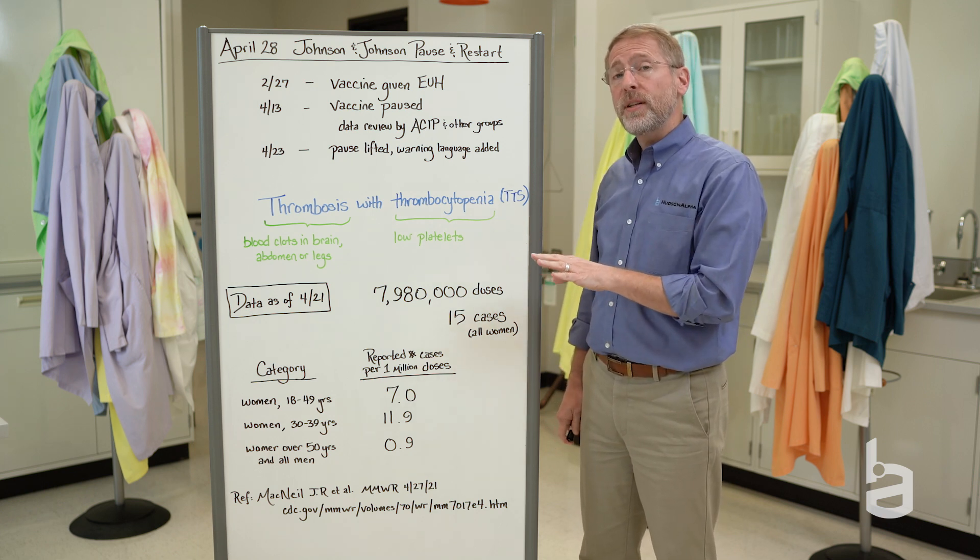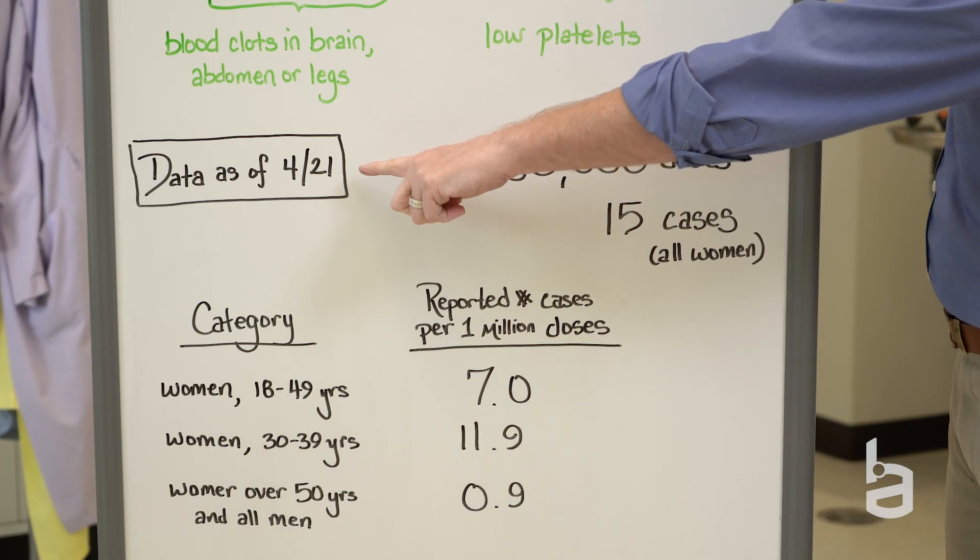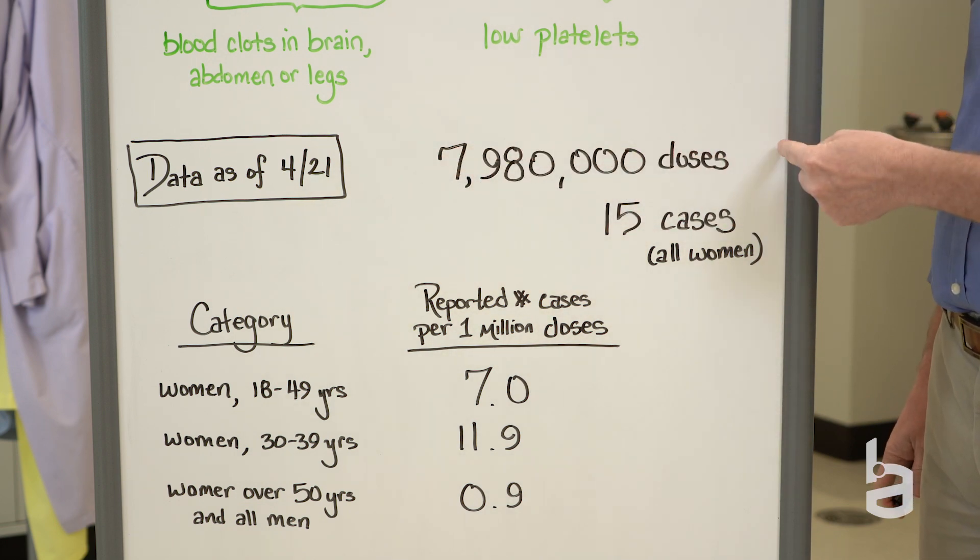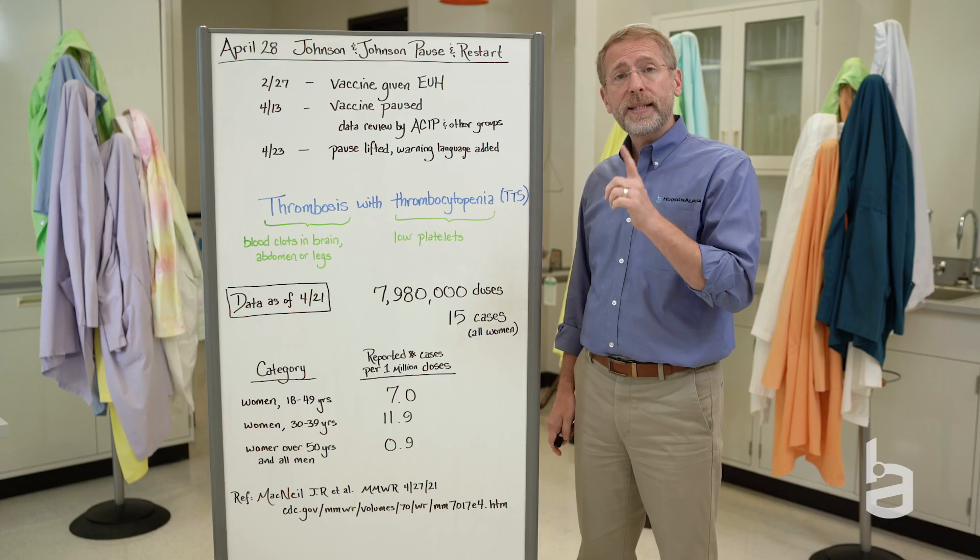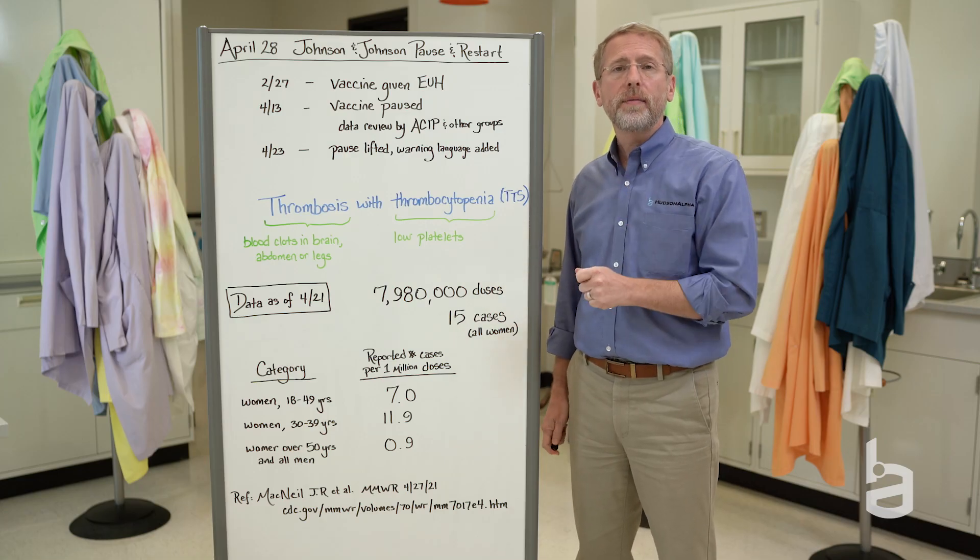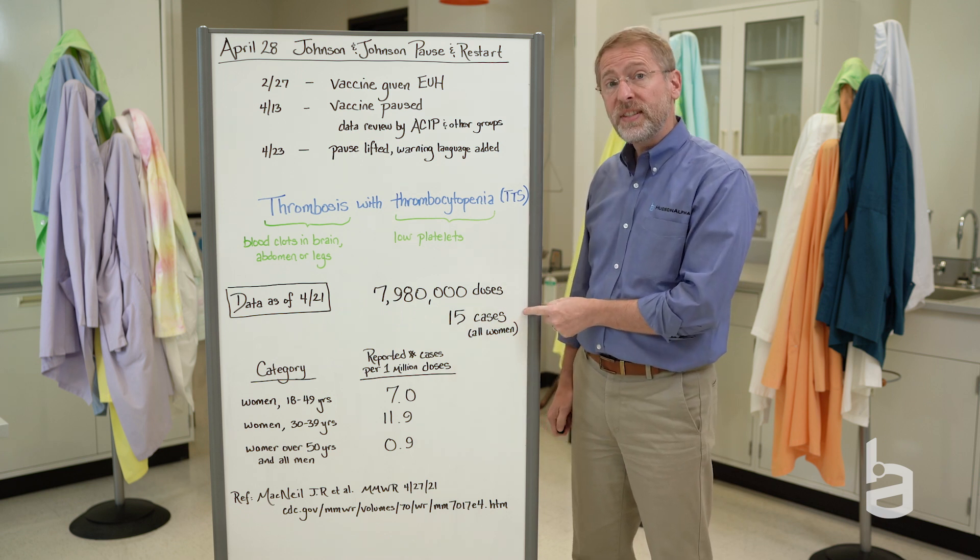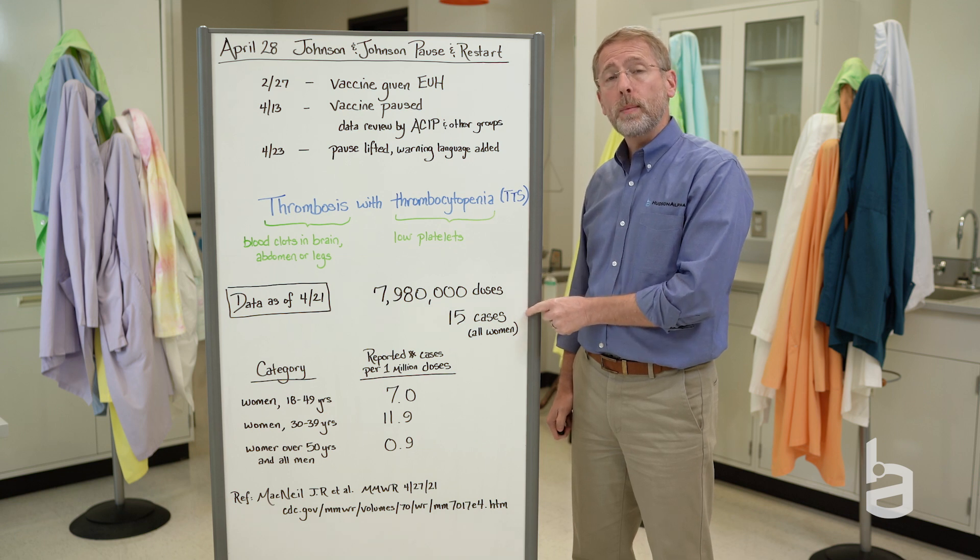Here's the data that we have. This is the data that the advisory committee looked at. So it's as of the 21st of April. By that point, there had been nearly 8 million doses of the Johnson & Johnson vaccine delivered, and about half of those went to women. And that's important because nearly all of these cases were identified in women. In fact, there were 15 cases in this batch that were identified and they were all women.